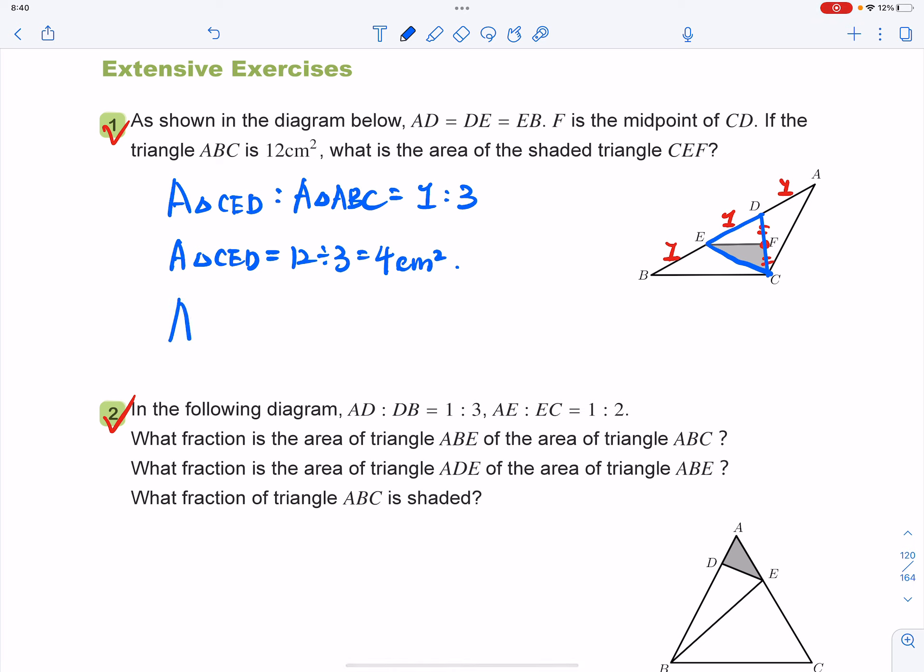So you can get the last step, the area of triangle CEF equals to just the half of the area of triangle CED. So the final answer equals to a half times by 4. We got 2 square centimeters.